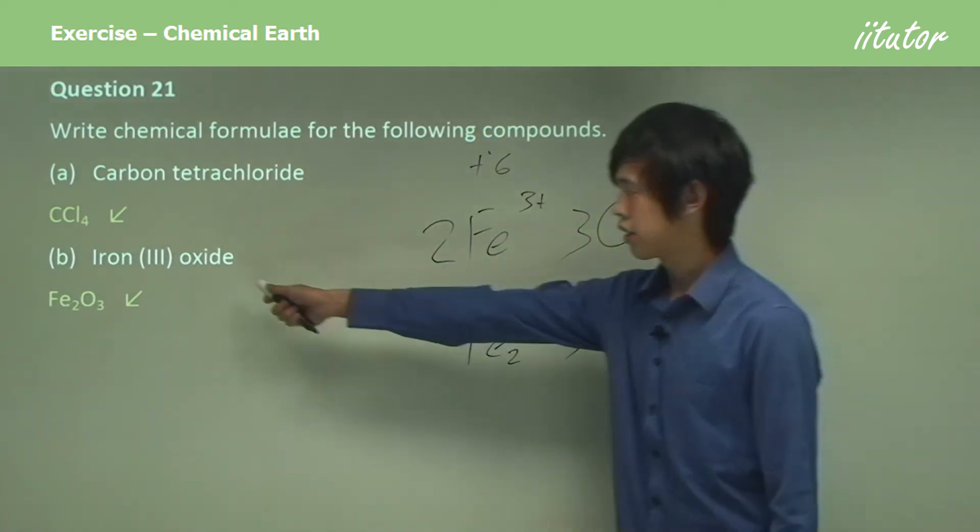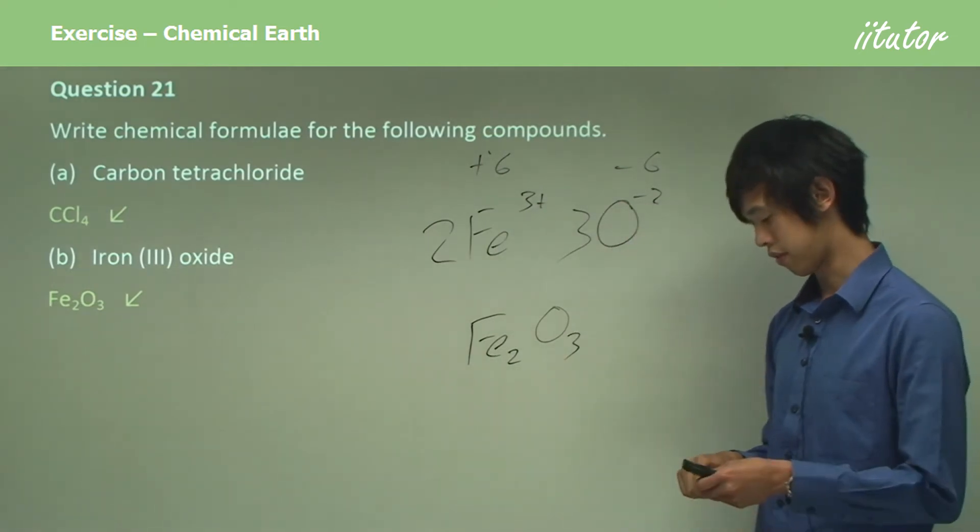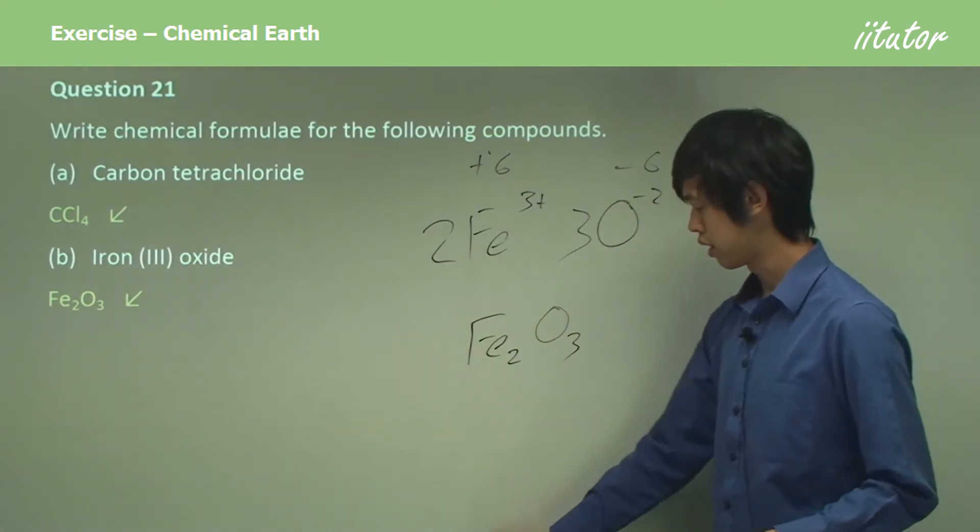So the 3 tells you the valency of the iron. And we usually know that the valency of oxygen is usually 2 minus.